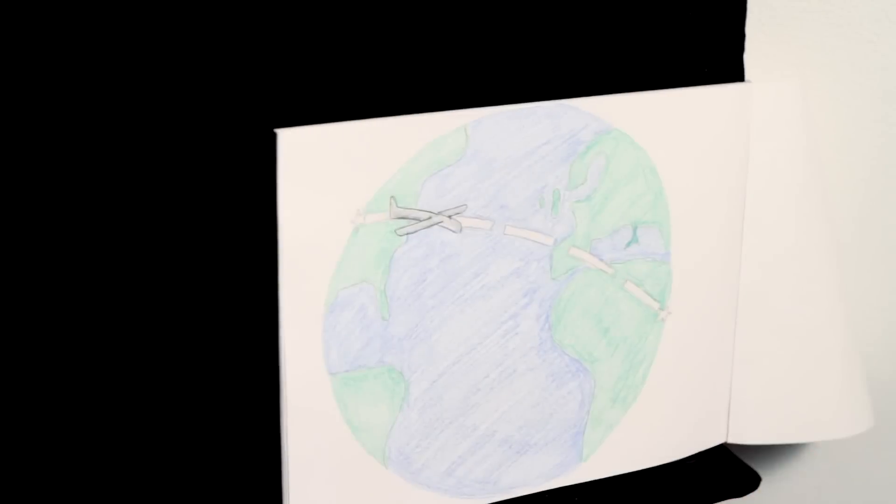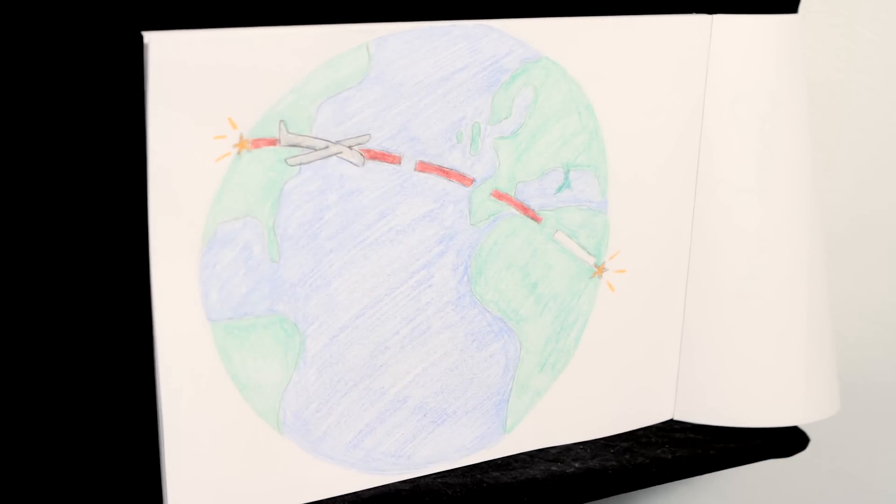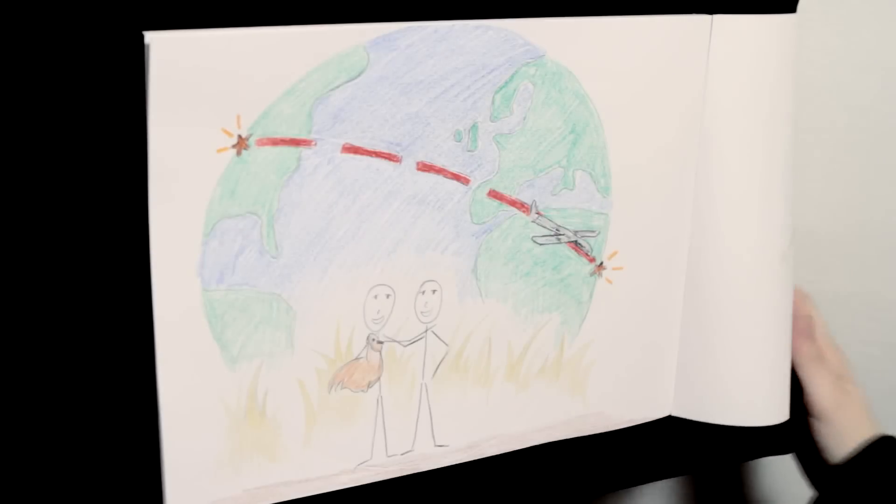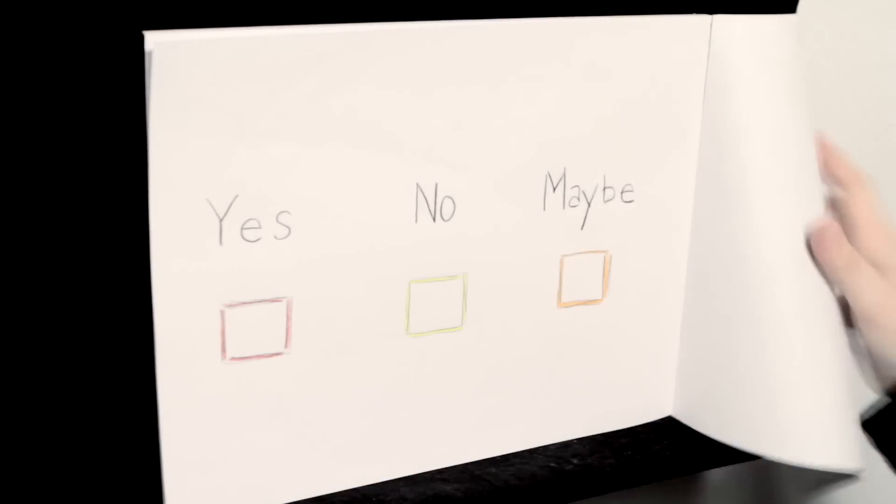And then we write a chapter about how the two groups come together. One takes a plane, one gives a rooster, both shake hands, and both begin a friendship.